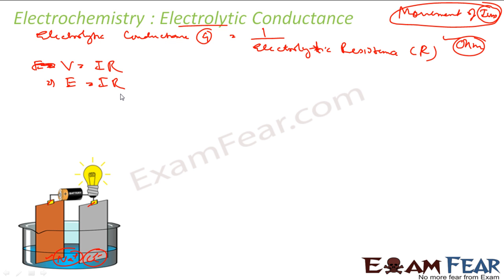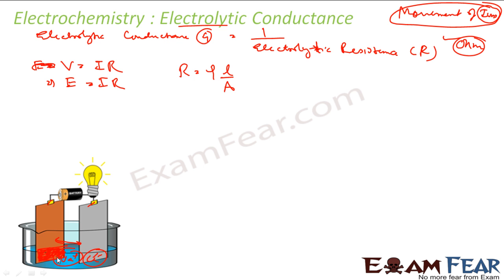Resistance is given by R = ρl/A, where ρ is resistivity, l is the distance between the two parallel plates, and A is the area of cross-section of the solution in contact with the electrode. Note that A is not the total area of the electrode — it is only the area of the electrode that is in contact with the solution.